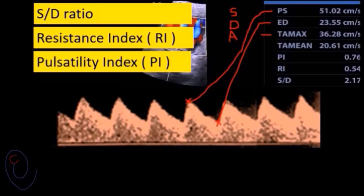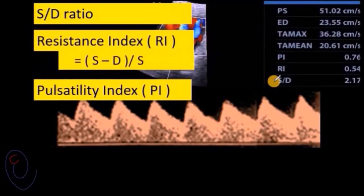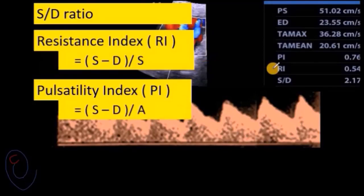The S/D ratio is the peak systolic velocity divided by the end diastolic velocity — in this example it's 2.17. The resistance index is the difference between S and D divided by S — in this example it's 0.54. The pulsatility index represents the difference between S and D divided by the average velocity — in this example it's 0.76.